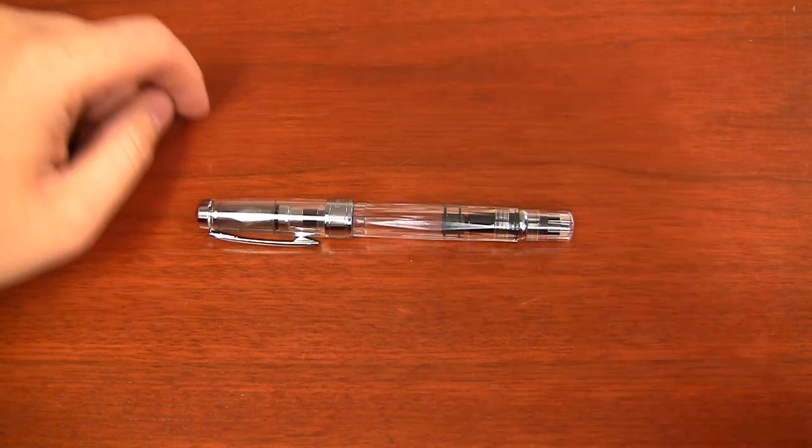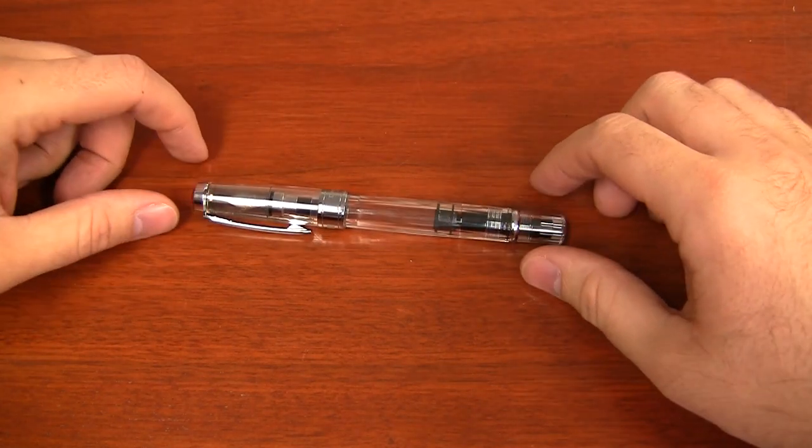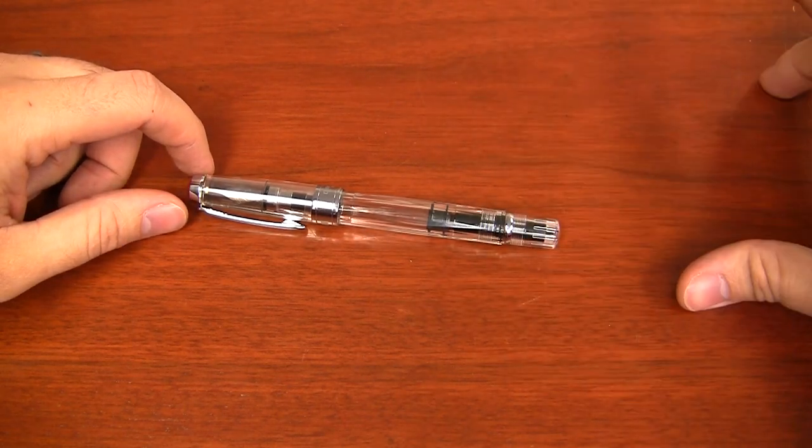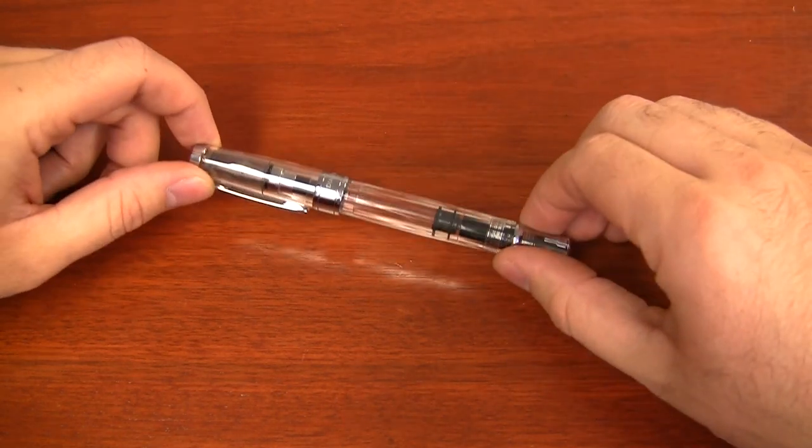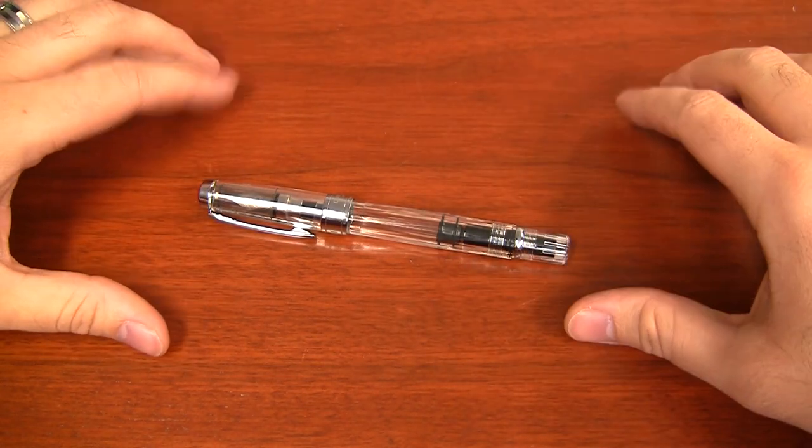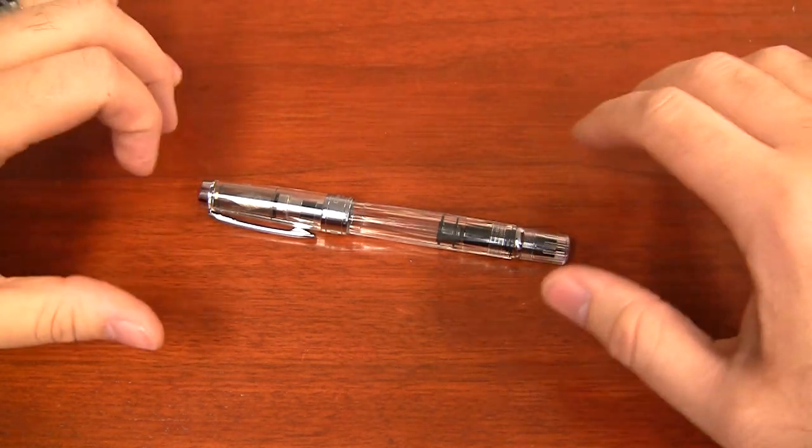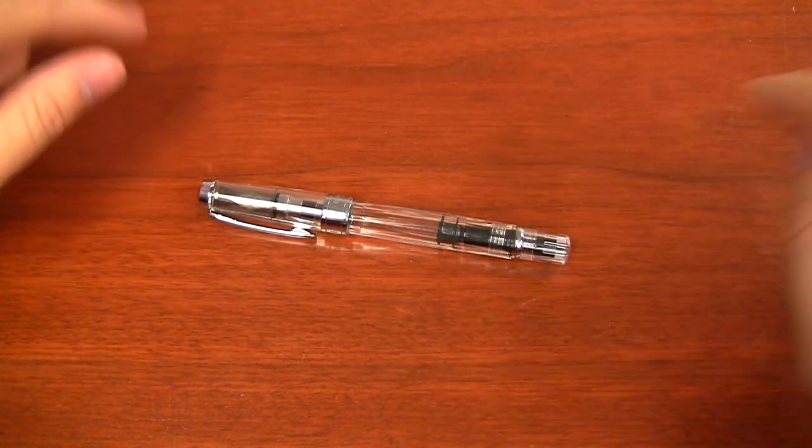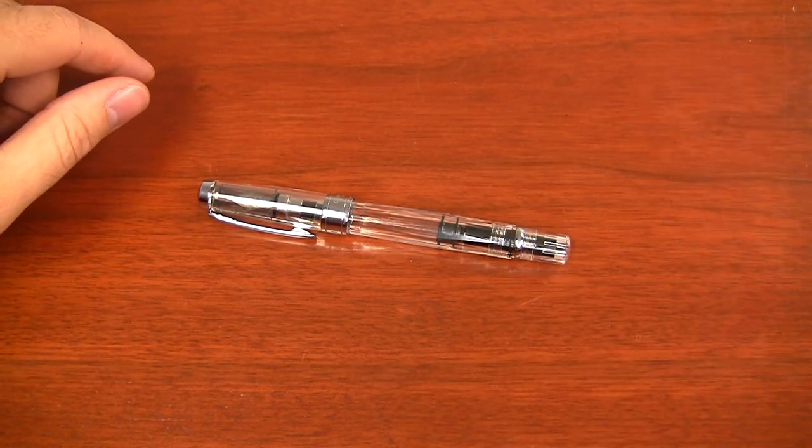This is the TWSBI 580 pen. It's TWSBI's flagship pen. It's actually very similar in design to the 540 and the 530, which are both older models of this pen. Though there are some minor differences, as far as what I'm going to show you here today, the concepts are going to be exactly the same for this pen as for those other two and for the TWSBI Mini as well.